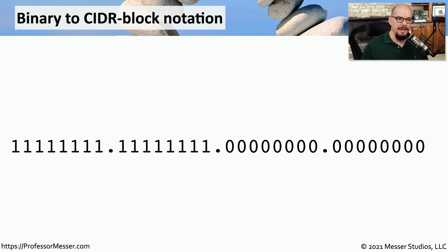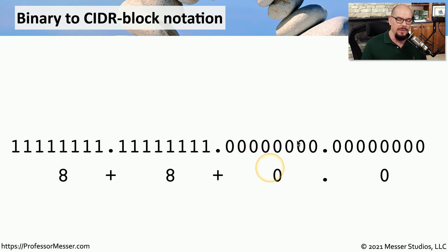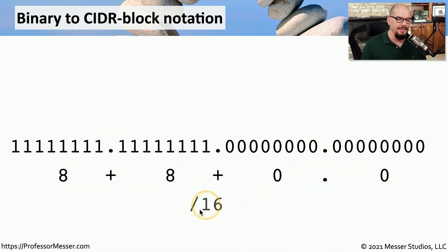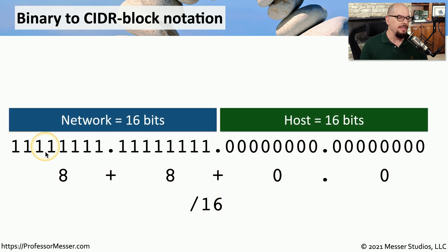Let's do another subnet mask calculation. This time we'll take a subnet mask of all 1s in the first two octets and all 0s in the last two octets. If we write out the number of bits set to 1 in each octet, we have 8 in the first octet, 8 in the second, 0 in the third, and 0 in the fourth. Adding those up gives us a slash 16, because 8 plus 8 plus 0 plus 0 equals 16. Breaking down the subnet mask, there are 16 bits on the network side and 16 bits set to 0 on the host side.